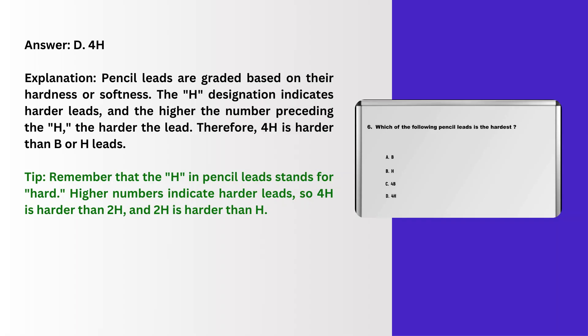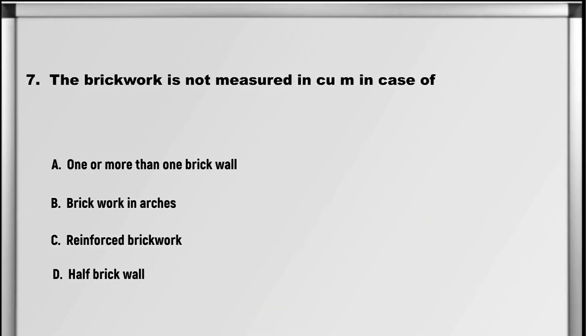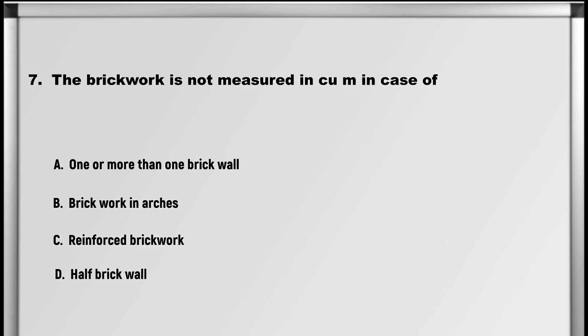Explanation: Pencil leads are graded based on their hardness or softness. The H designation indicates harder leads and the higher the number preceding the H, the harder the lead. Therefore, 4H is harder than B or H leads. Tip: remember that the H in pencil leads stands for hard. Higher numbers indicate harder leads, so 4H is harder than 2H, and 2H is harder than H.